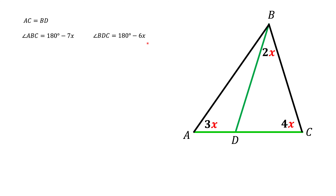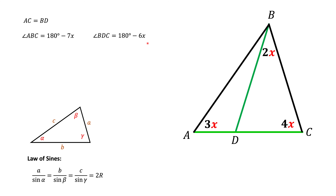Now we're going to use the law of sines to solve this problem. The law of sines tells us that the ratio of a side of a triangle to the sine of the opposite angle should be the same for all sides. It also equals two times the radius of the circumscribed circle, but we don't need that for this particular problem.